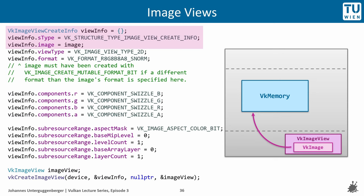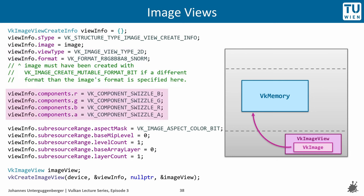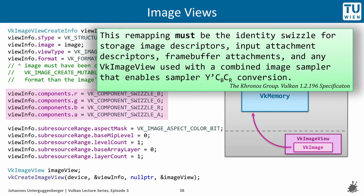The image view wrapper around a VkImage instance can be created using a VkImageViewCreateInfo struct. We establish a reference to a concrete VkImage, set the view type to 2D, and specify the format, which does not have to match the VkImage's format but can be different for format conversions. The components of the original image can be remapped with an image view, for example changing the order of color components from RGB to BGR. However, this swizzling can only be used in certain situations — the specification states it must be the identity swizzle for storage image descriptors, input attachment descriptors, framebuffer attachments, and any VkImageView used with a combined image sampler that enables sampler YCbCr conversion.